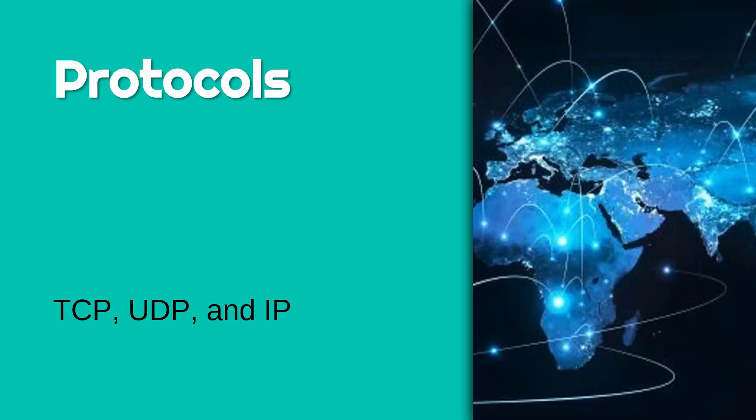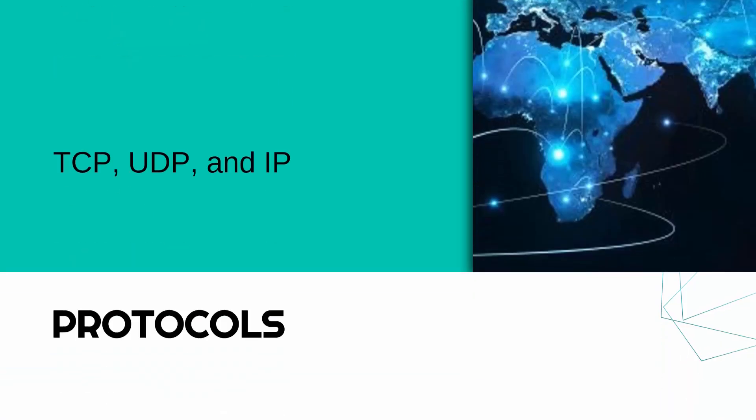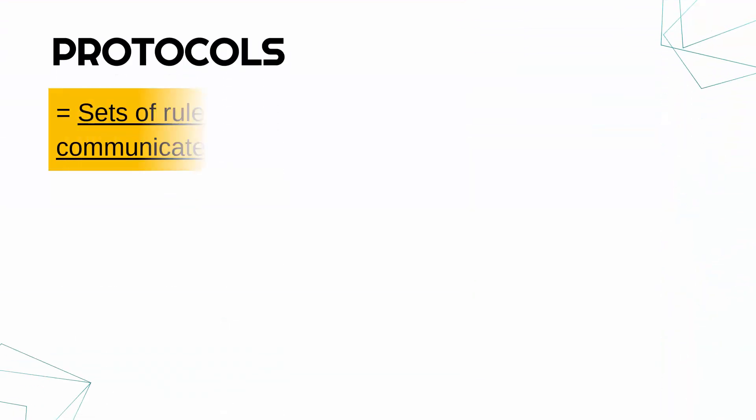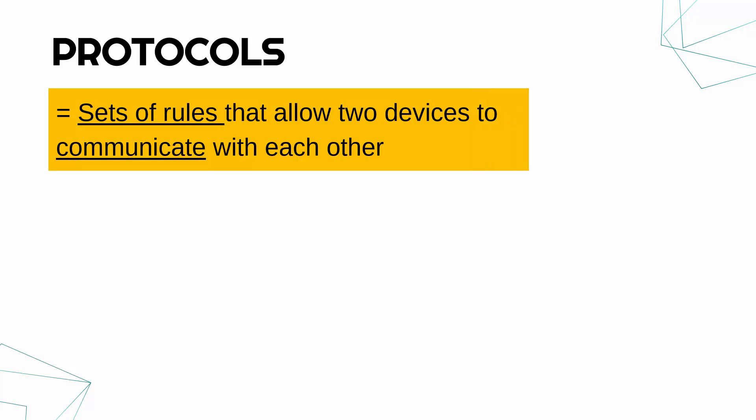In this and the next video, I'm going to go through what network protocols are, focusing on three particular high-profile protocols: TCP, UDP, and IP. But before I do, let's define what a protocol is. A protocol for a network is a set of rules that allow two devices to communicate with each other.